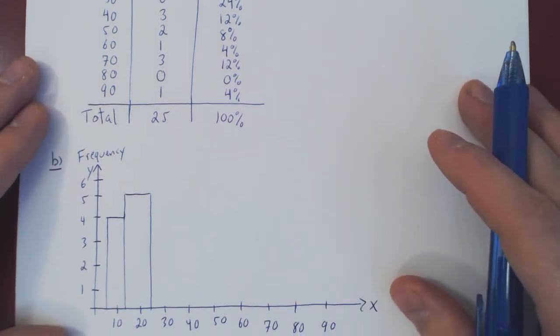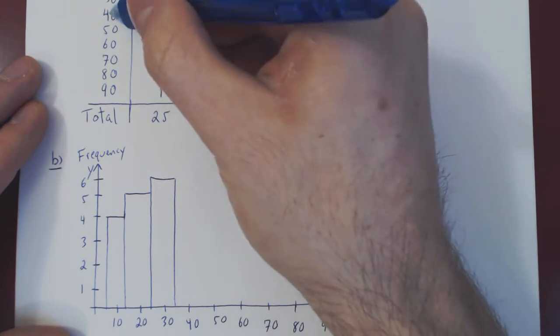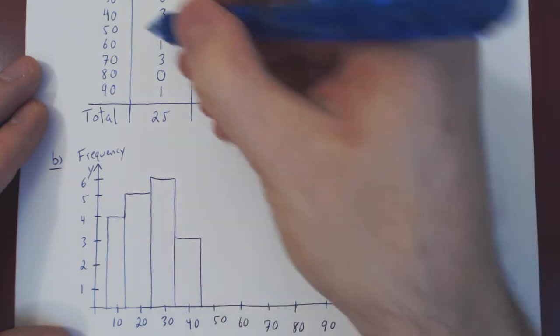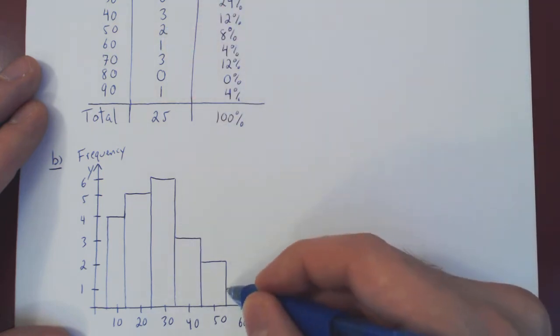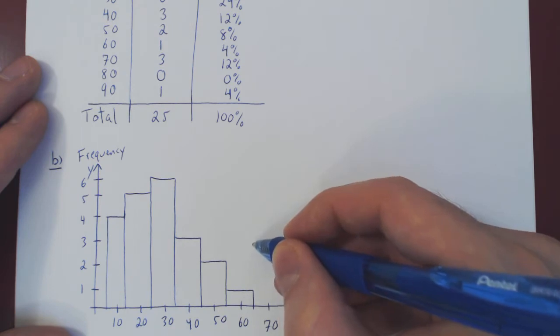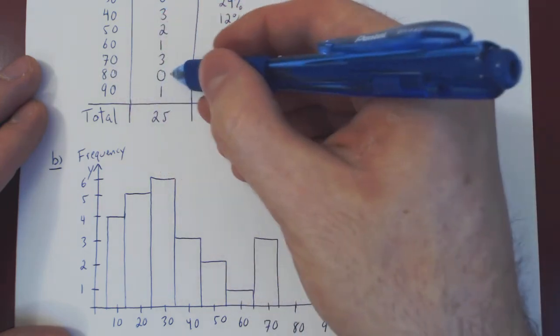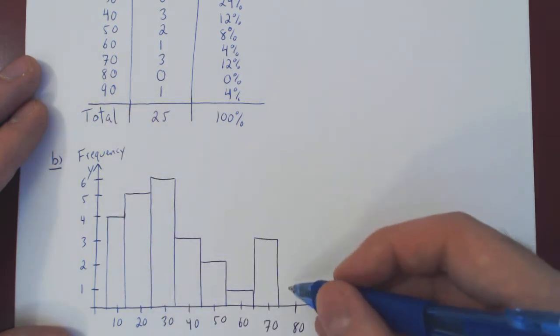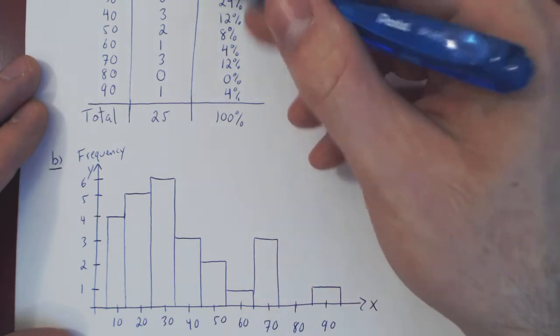People in their thirties, there's six of them. People in their forties, there's three of them. People in their fifties, there's only two. People in their sixties, there's only one. People in their seventies, there's three. People in their eighties, there's zero. So no vertical bar represents a zero frequency. And finally, one person in their nineties. And that's it. This is our bar graph for the given frequency distribution table.